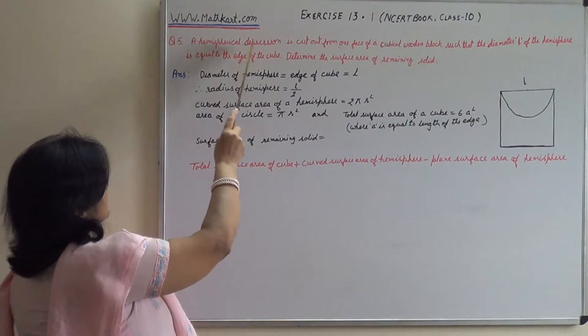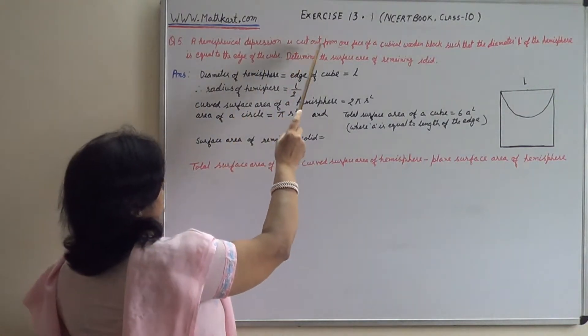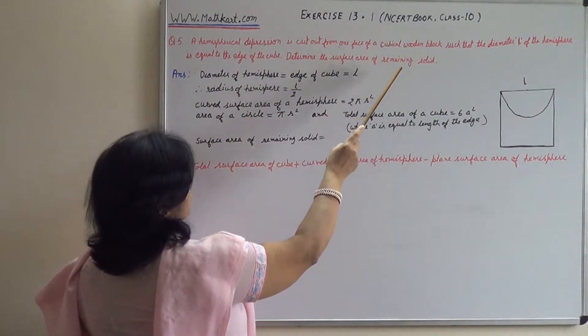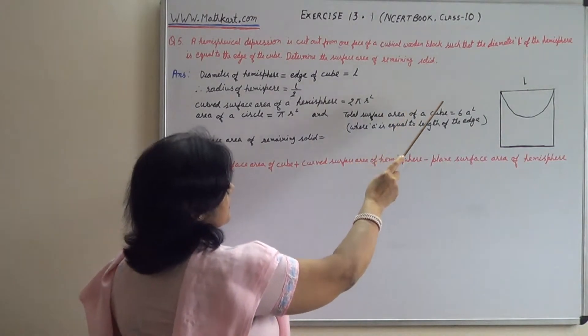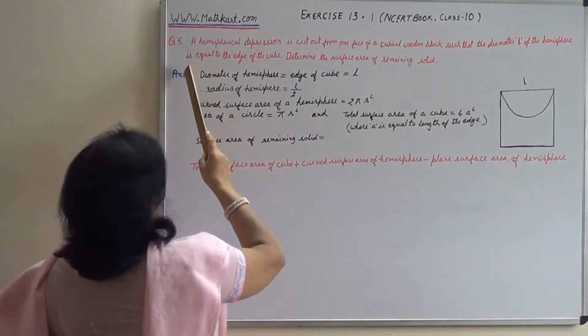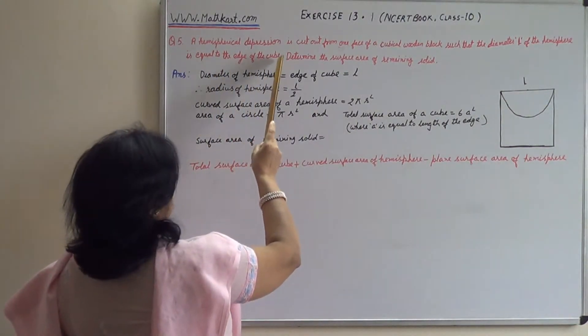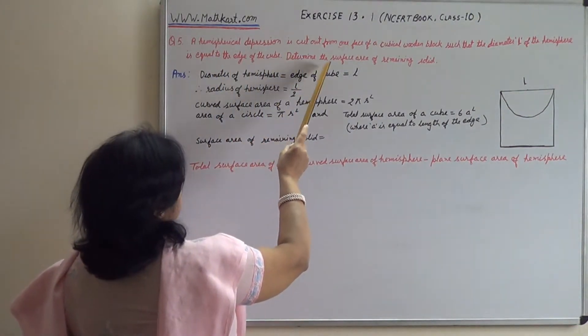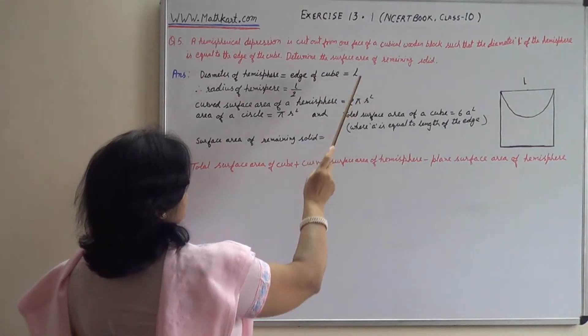A hemispherical depression is cut out from a face of a cubical wooden block such that the diameter L of the hemisphere is equal to the edge of the cube. Determine the surface area of remaining solid.